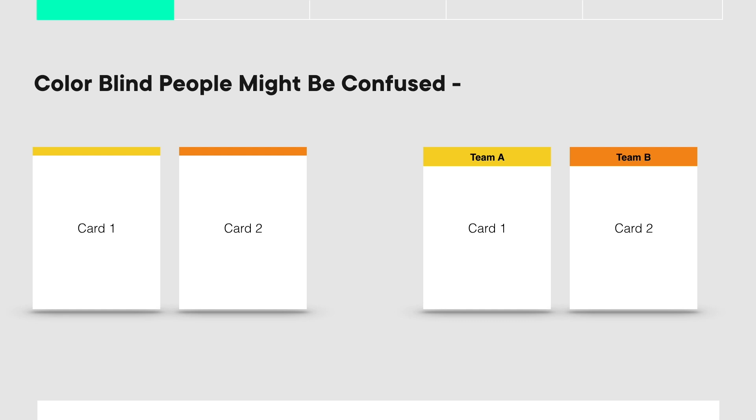One more thing to keep in mind when designing: don't use color alone to make differentiations. Some people are colorblind and might not see the difference. For example, if you have two types of cards — one labeled with yellow and one with orange — somebody with colorblindness might not see that they're different. If you're designing a task management tool and want to show project status using only color, someone might not see the difference or urgency. So make sure you add something else besides color — for example, adding labels like 'Team A' and 'Team B' so it's not relying on color alone.